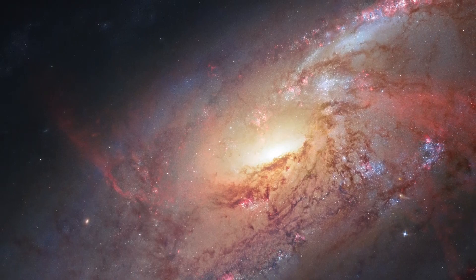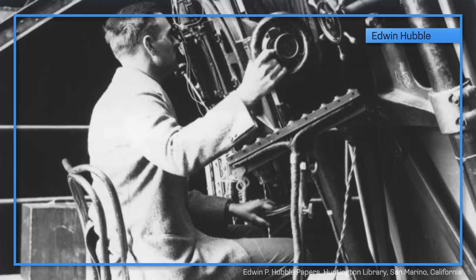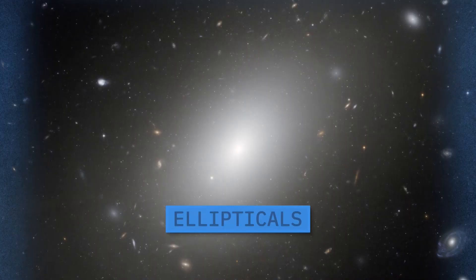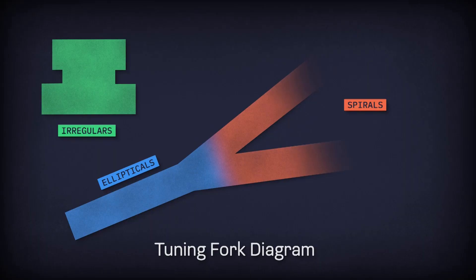Hubble's namesake, astronomer Edwin Hubble, pioneered the study of galaxies based simply on their appearance. He divided galaxies into three basic forms: ellipticals, spirals, and irregulars. Labeled the tuning fork diagram, Edwin Hubble's basic arrangement is still in use today.